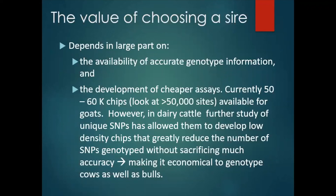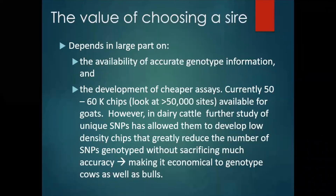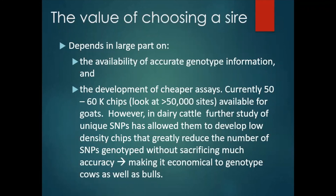Currently 50 to 60K chips that look at more than 50,000 sites are available for goats. However, in dairy cattle they've been able to eliminate many sites that don't provide much information. This has allowed them to develop low-density chips that greatly reduce the number of SNPs genotyped without sacrificing much accuracy for important traits, and this makes it economical to genotype cows as well as bulls.